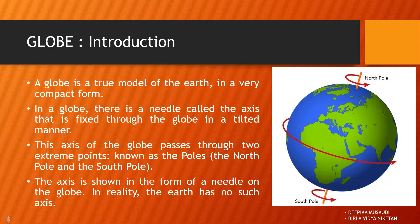In a globe, there is a needle called the axis that is fixed through the globe in a tilted manner. This axis of the globe passes through two extreme points known as the poles — the north pole and the south pole. The axis is shown in the form of a needle on the globe. In reality, the earth has no such axis but it is tilted at 23 and a half degrees.